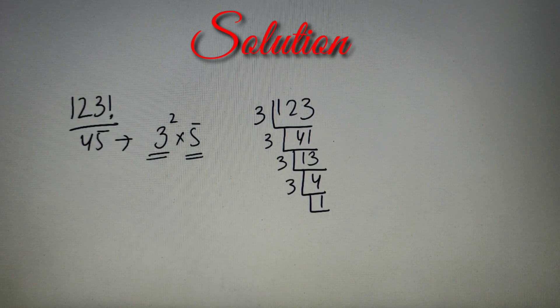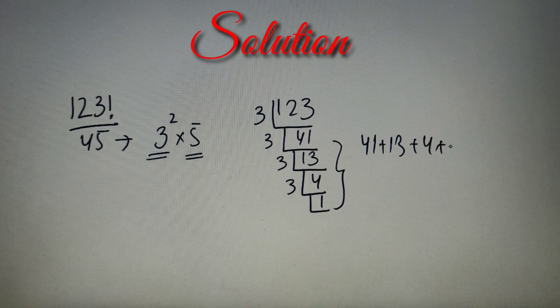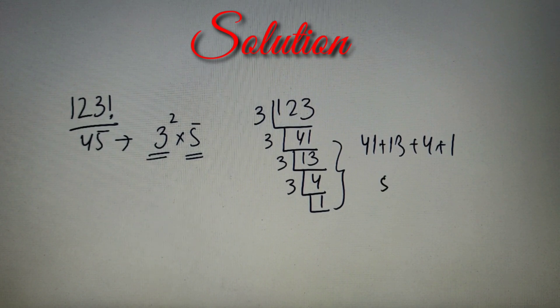Now the next step is to add all these quotients. So we'll get 41 plus 13 plus 4 plus 1, and upon adding we'll get 5 plus 13 is 18, and 41 plus 18 is equal to 59.